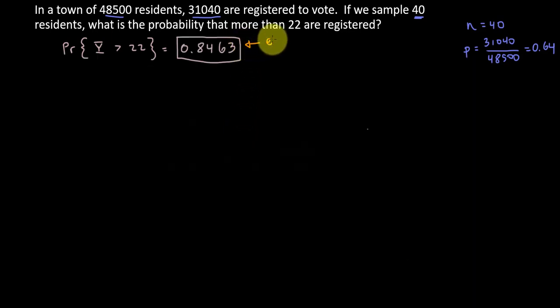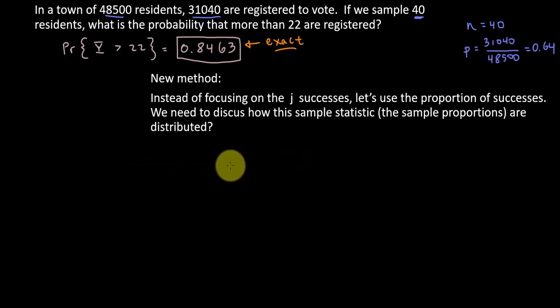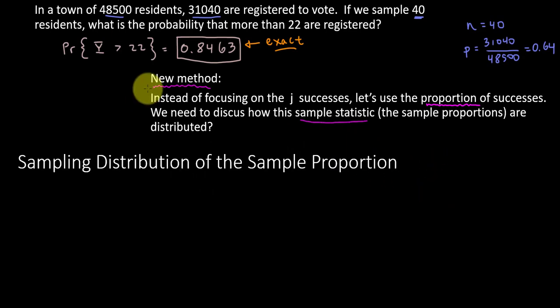We would call this an exact solution because there was no real approximation to the method behind finding this probability. This new method of ours is going to be, as mentioned, instead of focusing on 22 or 23 successes, we're going to focus on the proportion of successes. But a proportion is a sample statistic. And so we need to know how this statistic is distributed.